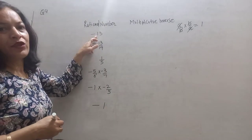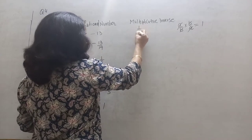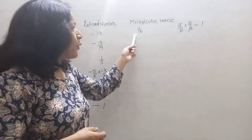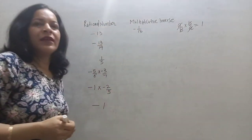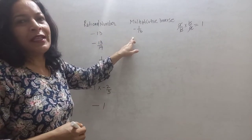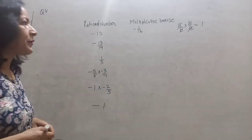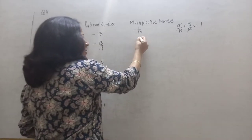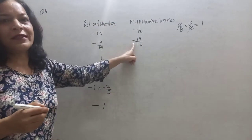For minus 13: what will be its reciprocal? Not 1 upon 13 — the reciprocal will have the same sign. If it is minus 13, its reciprocal will be 1 upon minus 13, which equals minus 1 upon 13. For minus 13 upon 9, its reciprocal will be minus 9 upon 13, with the minus sign as it is.